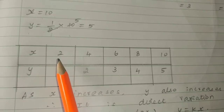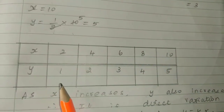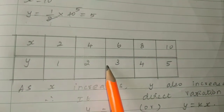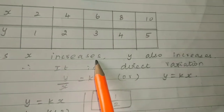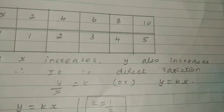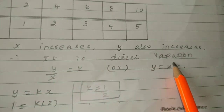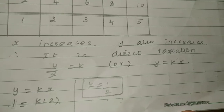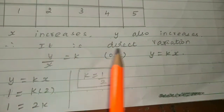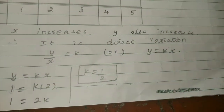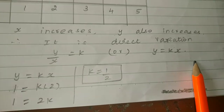As x increases, y is also increasing. So as x increases at the same time y increases. You can say this is direct variation — when x increases, y increases, it is direct variation.